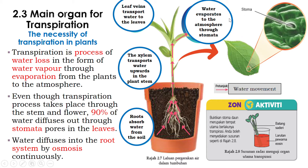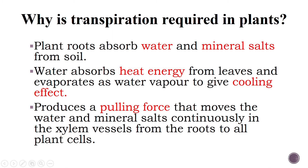At the stomata, water evaporates to the atmosphere when they are open. In this activity, when the stem is submerged in the red eosin solution, after a few hours you can actually see the red traces — the red lines — confirming that water indeed travels up through the xylem, and once again proving that the leaf stomata are the main site of transpiration.